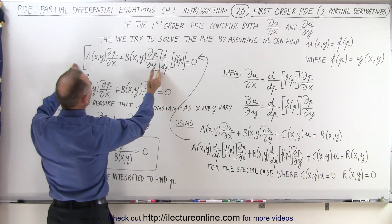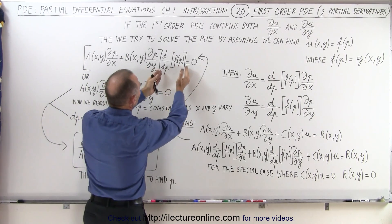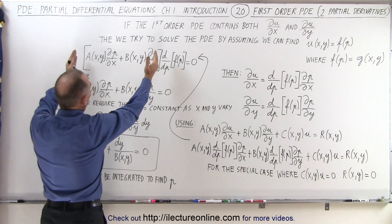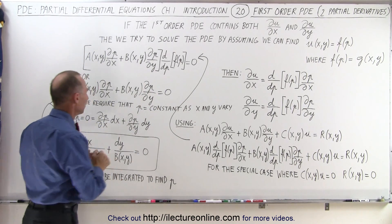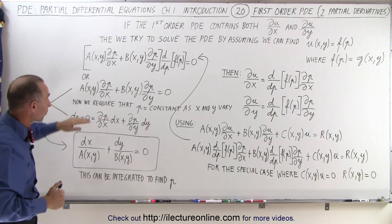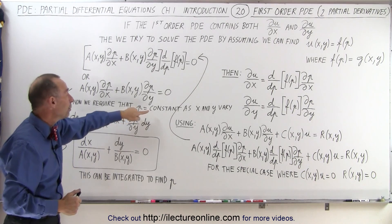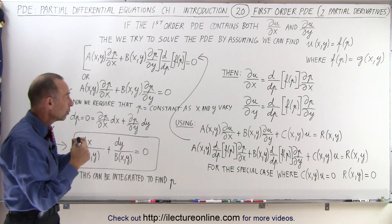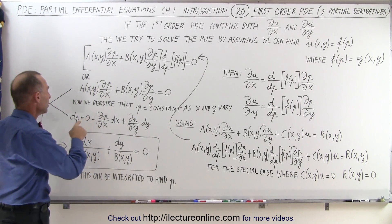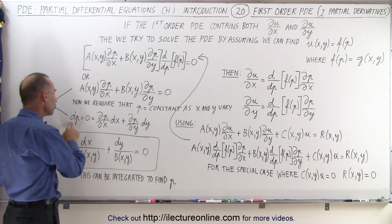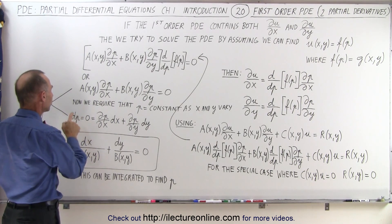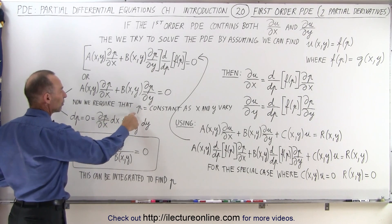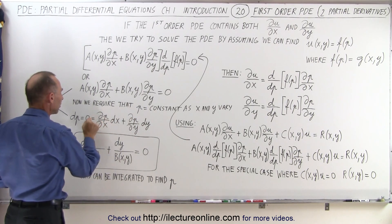Now that means that either what's in the bracket is equal to zero or the derivative of F(P) is equal to zero. If the derivative is equal to zero we don't have much of a solution, so we're going to take a look at what's inside the brackets and set that equal to zero. We're also going to require that P remains constant as we vary X and Y, so we pick a specific X and Y so that P remains constant. If P remains constant, then the change in P must be equal to zero, and therefore we can write dP as the partial of P with respect to X times dX plus the partial of P with respect to Y times dY, set equal to zero.